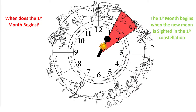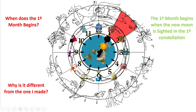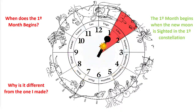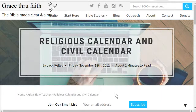Now, why is it different from the one that I made? You can see mine compared to this one — the difference is in the order. There are differences between the civil and the biblical calendars. There are two major calendars, the way the Jewish nation sees them: the biblical or religious calendar and the civil calendar. You can simply search this on YouTube or Google and find that there are differences between the religious calendar and the civil calendar from the Jewish nation.